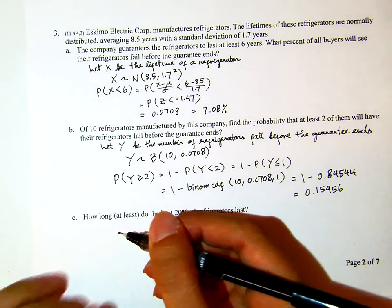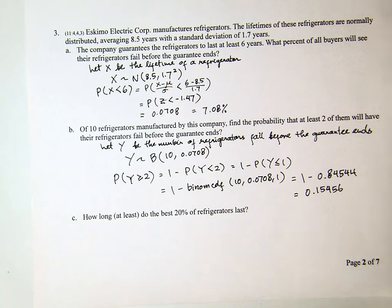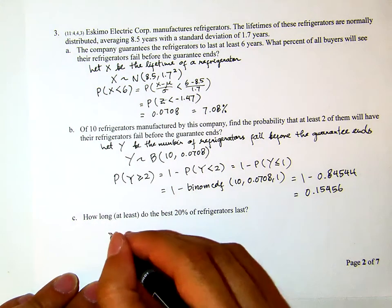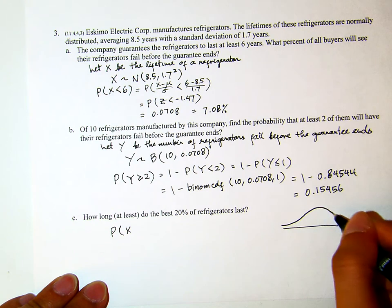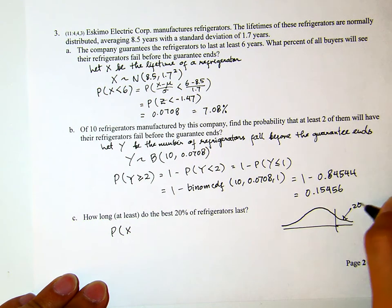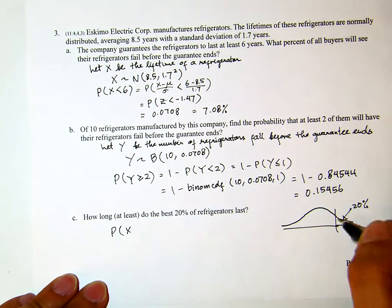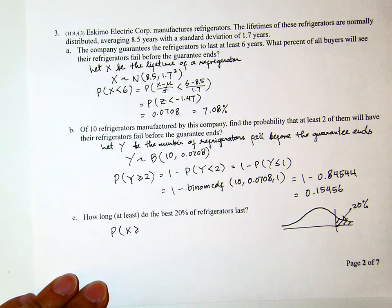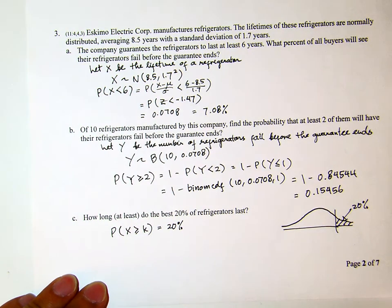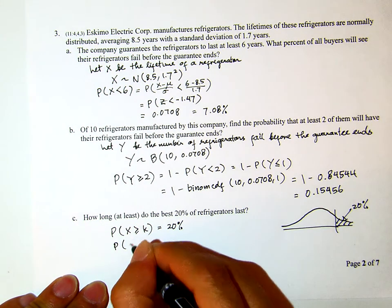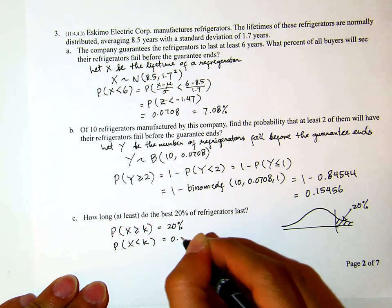This is basically asking: for the top 20% of fridges, what is the minimum lifetime? We want P(X ≥ K) = 0.20, which is the same as P(X < K) = 0.80, since this is 0.2 in the upper tail. If I standardize this, it becomes P(Z < (K − 8.5) / 1.7) = 0.80.